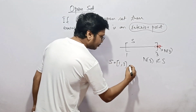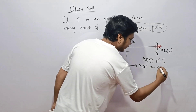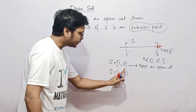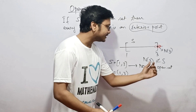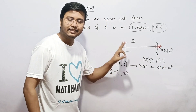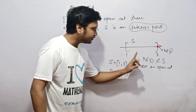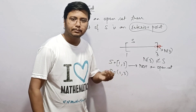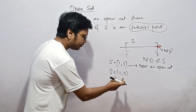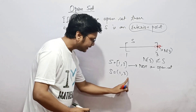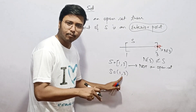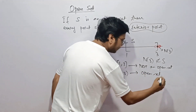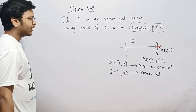Similarly, 1 is not an interior point either. So not every point of [1, 3] is an interior point, which means S is not an open set. But if I change this example slightly by making it the open interval (1, 3), then 1 and 3 are not present in the set at all, so the question of those two points being interior points doesn't arise. Every point of (1, 3) is an interior point, so this is an example of an open set.